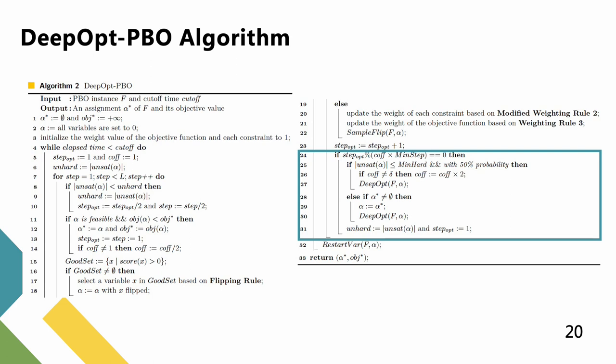If the size of unsat(α) is not larger than mean-hard, the algorithm calls the DeepOPT method with 50% probability. Otherwise, if α* is not empty, the algorithm will use α* as a perturbation initialization assignment, and then employ the DeepOPT method.